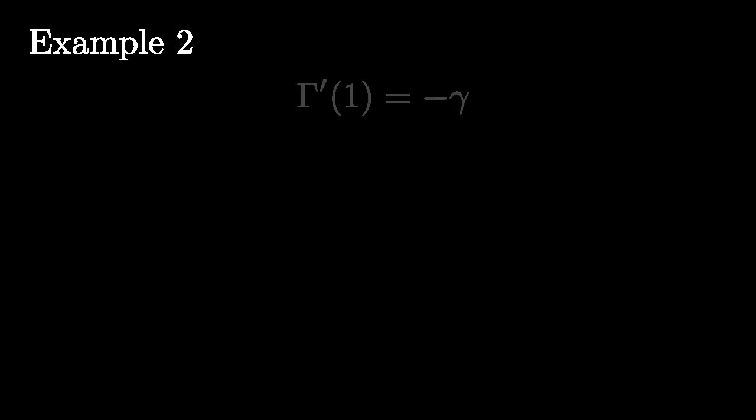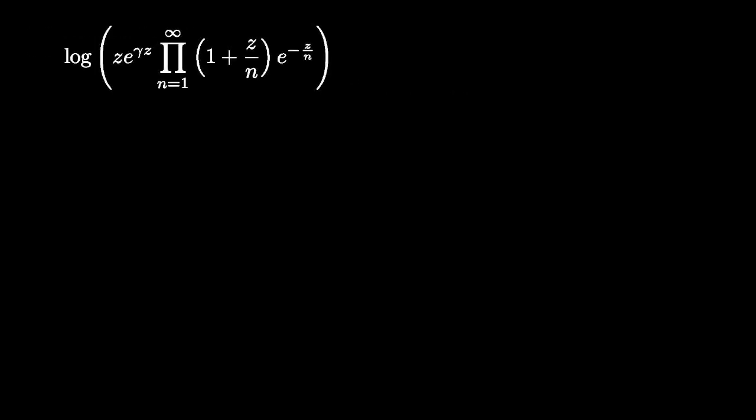Let's evaluate the first derivative of the gamma function at Z equals 1. To do so, we'll take the logarithmic derivative of the Weierstrass canonical form.